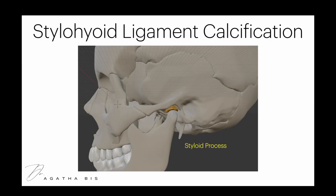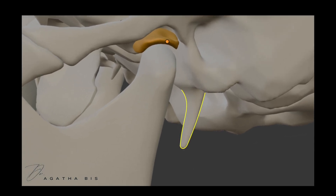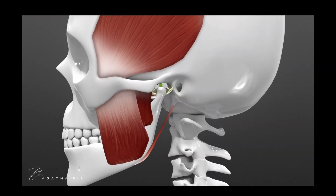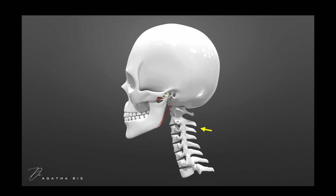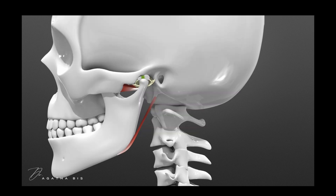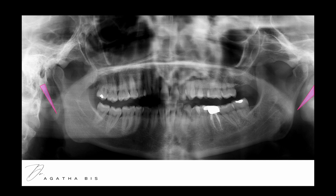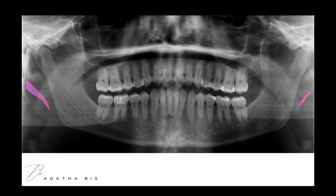Styloid ligament calcifications: the styloid process is a slender projection of bone extending downward from the temporal bone of the skull, serving as an attachment point for muscles and ligaments associated with the tongue and throat. The stylohyoid ligament runs from the styloid process to the hyoid bone. In individuals who clench and grind their teeth, this ligament becomes overused, leading to calcification and hardening as a protective response, making it visible on x-rays such as a Panorex. Here's a stylohyoid process on a patient — both sides — you can see how much it's grown and calcified.